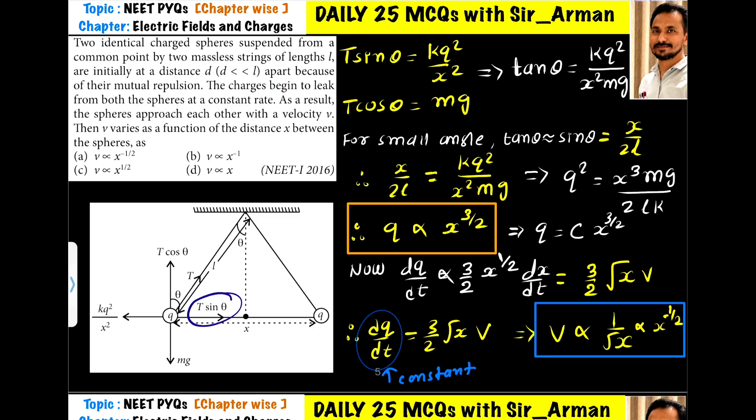As per the question, it is given that d is very much less than l, meaning the separation between the two charges is very small. In that case, angle θ is very small, and for small angles we can assume sin θ equals tan θ. sin θ equals opposite/hypotenuse. The opposite here is x/2 and the hypotenuse is l, so sin θ = x/2l.